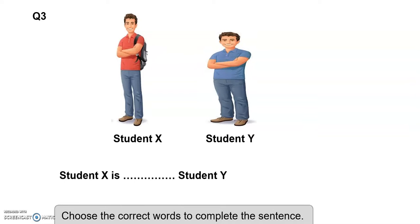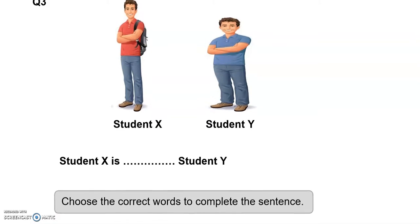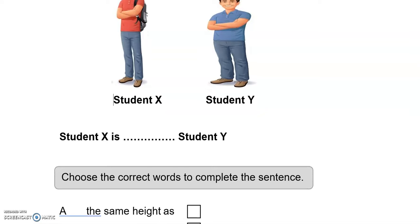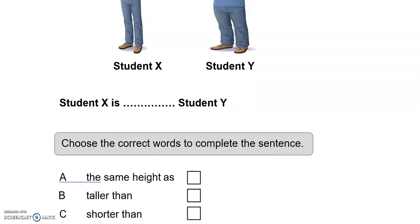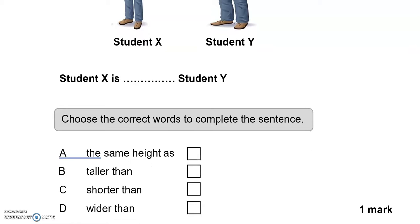Question three: student X, student Y. Choose the correct words to complete the sentence. You can see that student X is taller, so student X is taller than, which is option B.